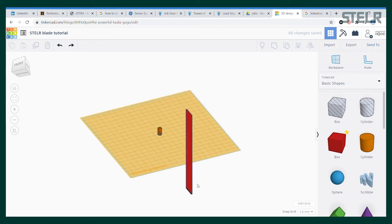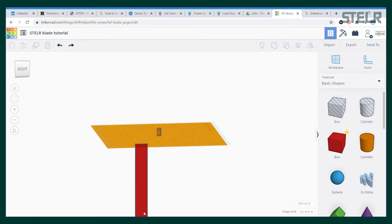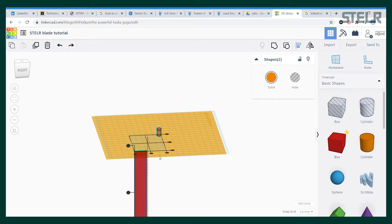Then we need to align it correctly. So select all of the parts and click the align tool. Then align the centers in two directions just like we did before.